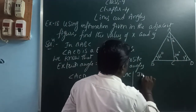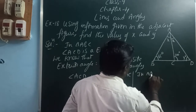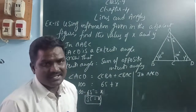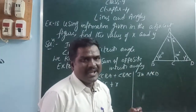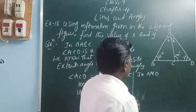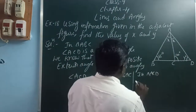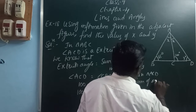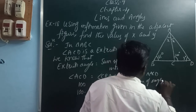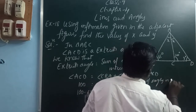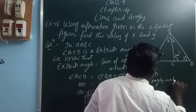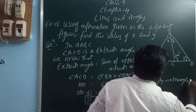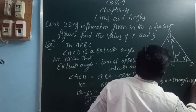Now in triangle ACD, we find Y using the angle sum property. The sum of angles in a triangle is 180 degrees.